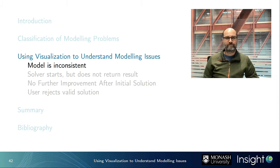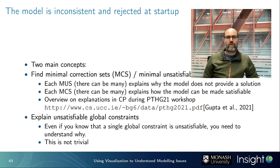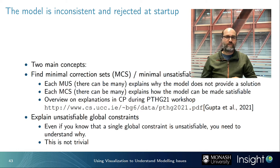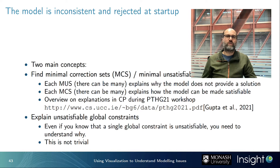We now look at visualization techniques for models that are unsatisfiable or inconsistent. If the model is rejected at startup, we can use two main concepts: minimum correction sets (MCS) and minimum unsatisfiable sets (MUS). An MUS is a subset of constraints that is itself already unsatisfiable, and removing any one constraint from it makes the rest satisfiable — giving a minimal explanation of what's wrong. There can be multiple MUSs for the same model.